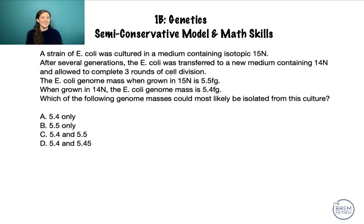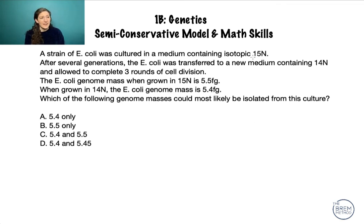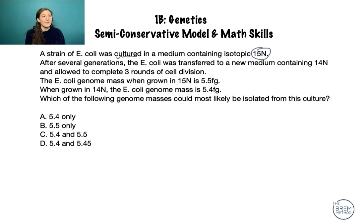Here's the hard question — it's a hefty question stem, so go ahead and pause and read it yourself. A strain of E. coli was cultured in a medium containing isotopic 15N — that is nitrogen. Nitrogens are in DNA as nitrogenous bases, so anytime these cells divide, they're picking up this isotopic 15N in their new DNA. So this E. coli is going to have 15N as part of its DNA.